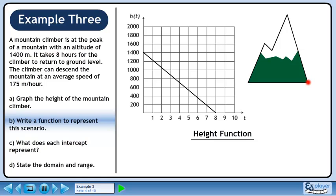In part B, we will find the height function for the climber. The height function is h equals minus 175t plus 1400.